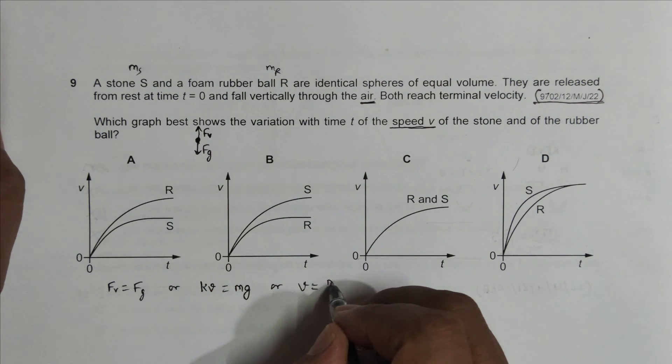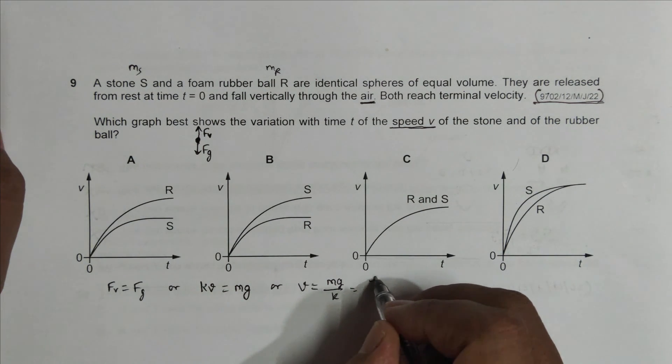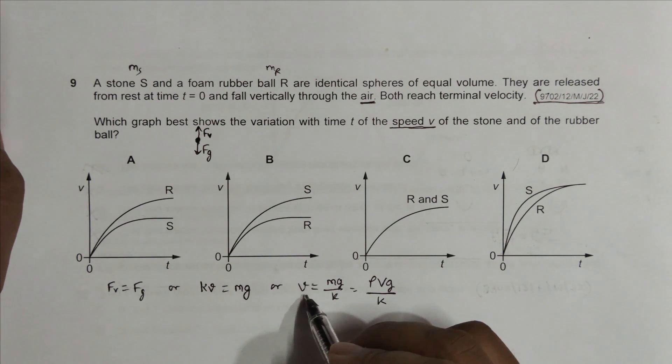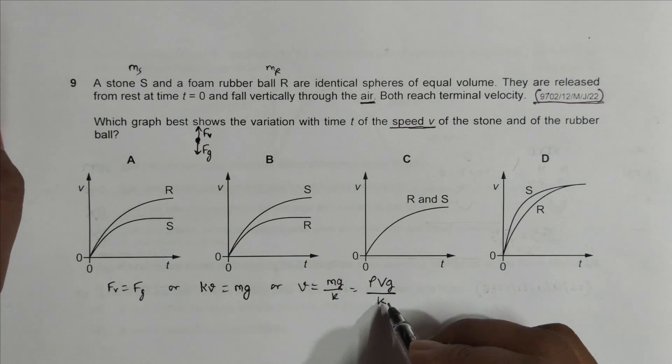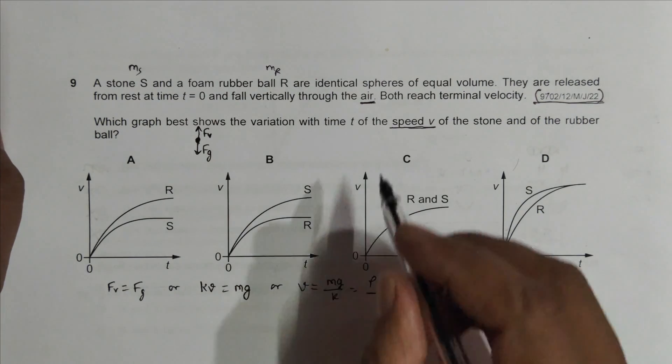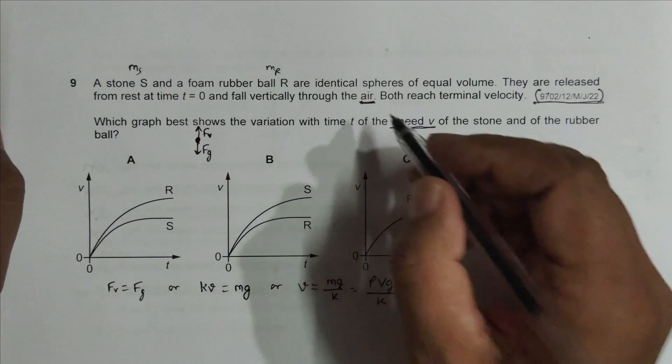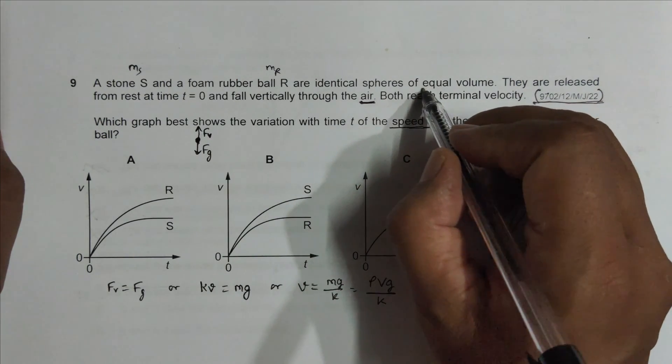I can write v = mg/k, or for this m I can write ρVg/k. Now what happens here is k is constant for the same medium, which is air, so k belongs to the air. V is constant because the problem says V is constant. g is constant for that body.